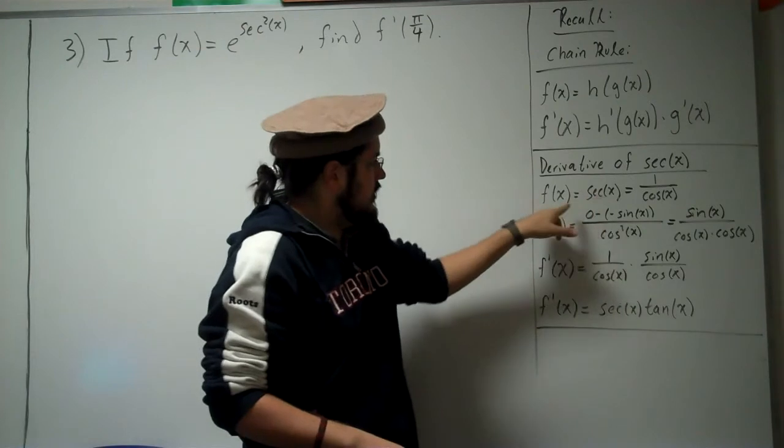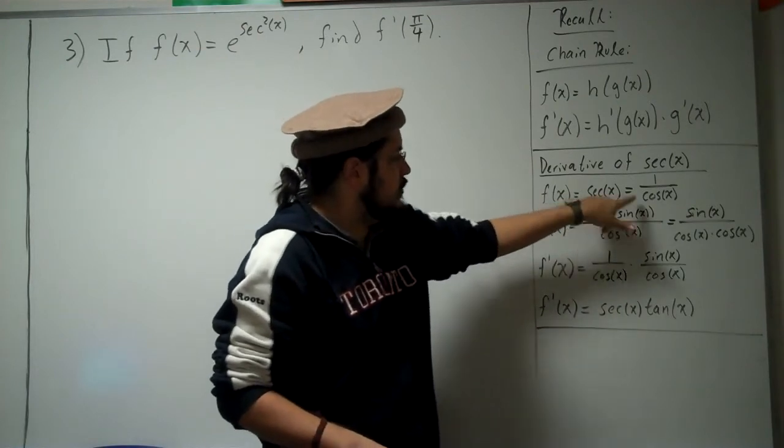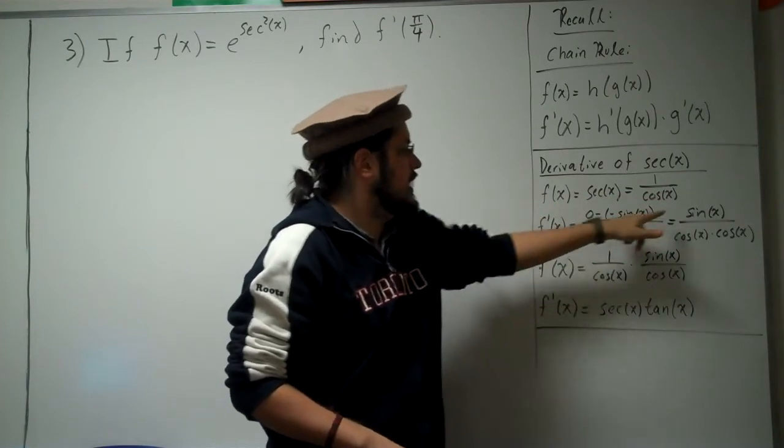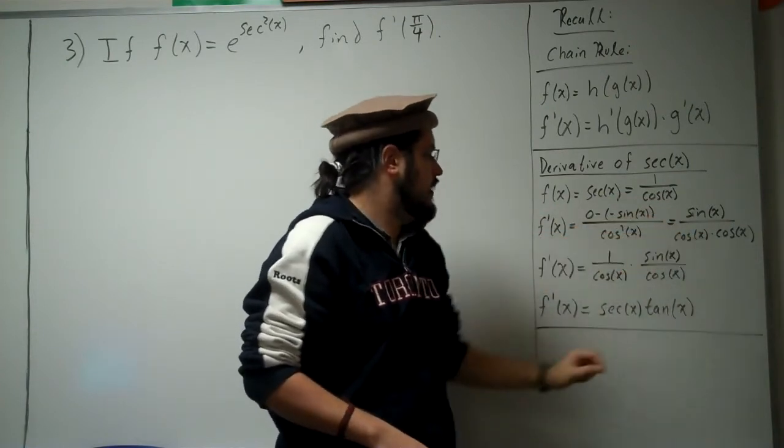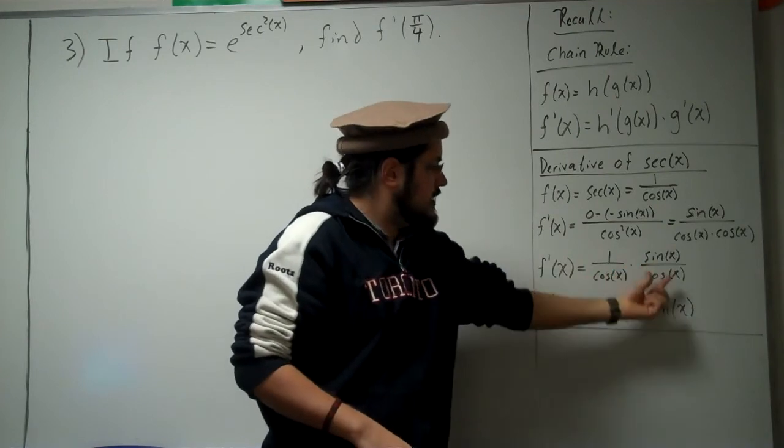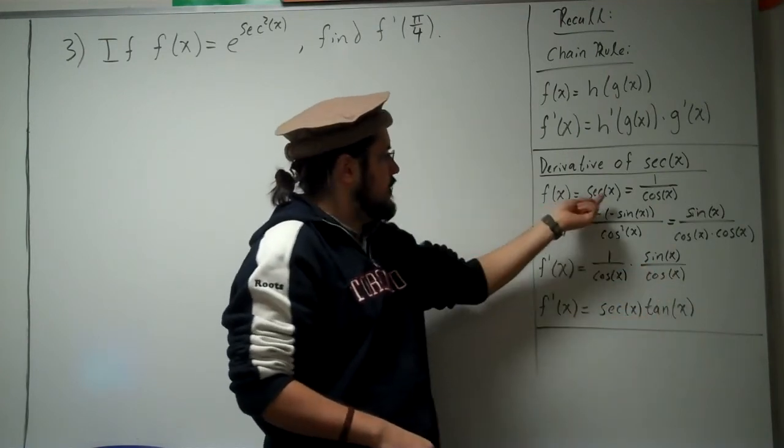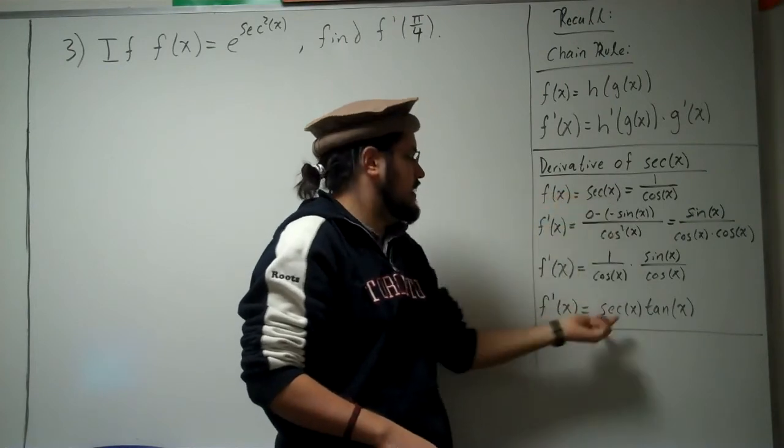So I'm going to head in right here. If you have f of x equals secant, you can replace that by 1 over cosine. By using the quotient rule, we can take the derivative, we get sine divided by cosine squared. Break that up as 1 over cosine times sine over cosine, and we obtain secant x tangent x. So the derivative of secant x is secant tangent.